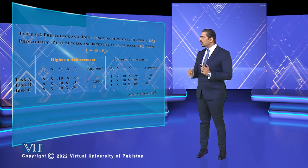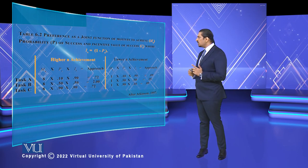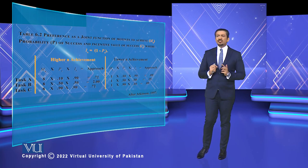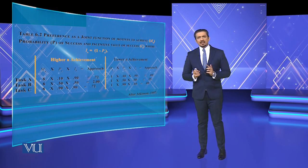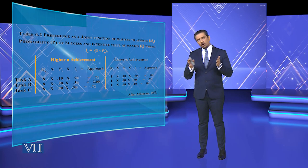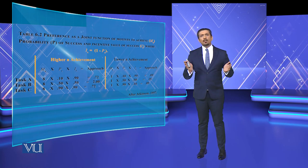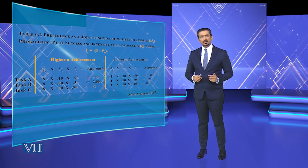All entrepreneurs must have this. The Atkinson model of the interaction of n-Achievement and risk-taking guides achievement away from extremes and moves it toward moderate risk. Thank you very much.